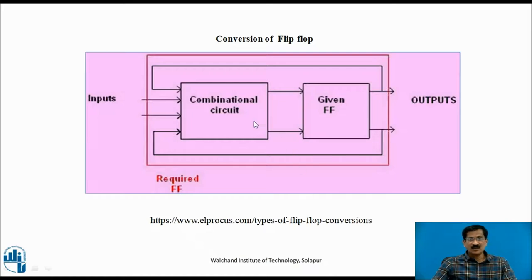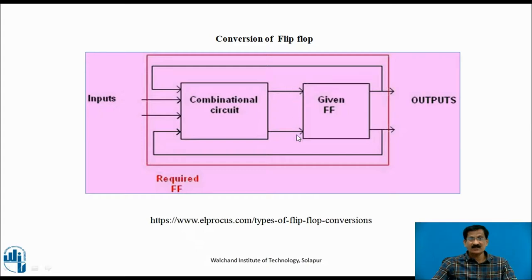This is the conversion of a flip-flop using a logical diagram. For example, for SR to JK flip-flop conversion: the SR flip-flop is the given flip-flop, and the JK flip-flop is the required flip-flop. The inputs to the combinational circuit are J and K, and the outputs are S and R. The combinational circuit also uses feedback from the Q output of the SR flip-flop.